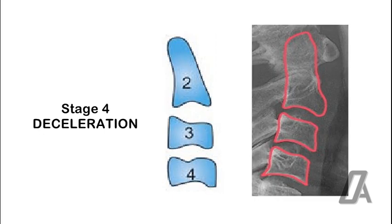Stage 4, Deceleration. In this, there is deceleration of adolescent growth spurt. Marked concavities are seen in C2, C3, and C4 in their inferior borders. Shape of C3 and C4 is square. 10-25% of pubertal growth remains.